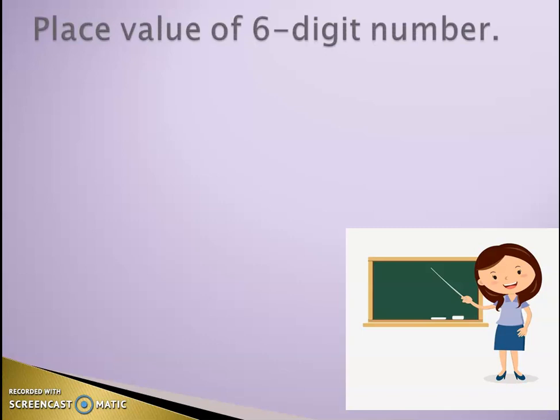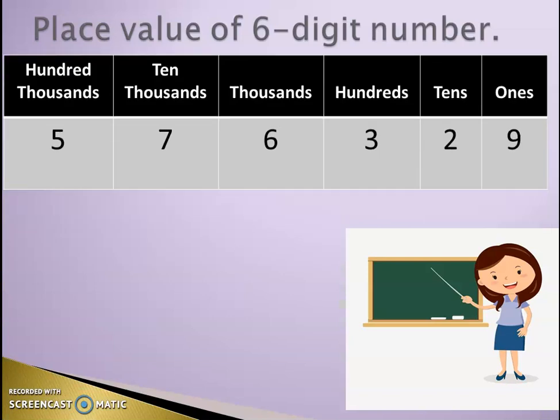Now, we are going to discuss the place value of 6-digit numbers. If you start from your right-hand side, the place value of 1 is ones, 2 is tens, 4 is hundreds, 5 is thousands, 7 is ten thousands, and 8 is hundred thousands. This is the 6th digit, so its place value is hundred thousands.